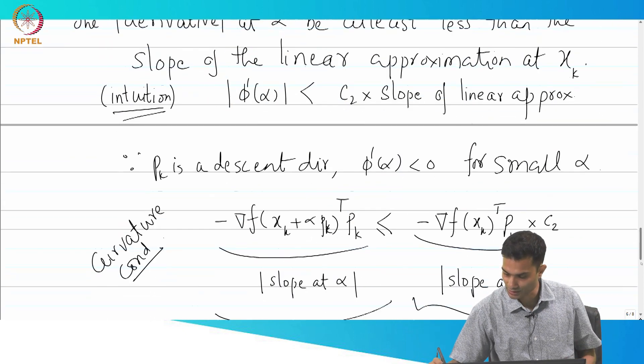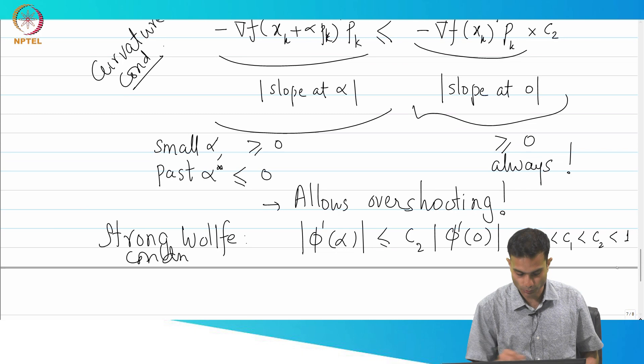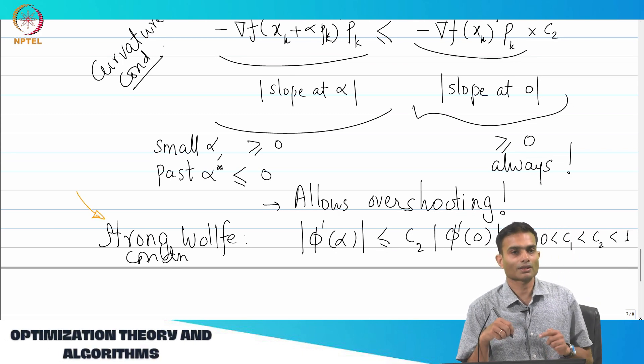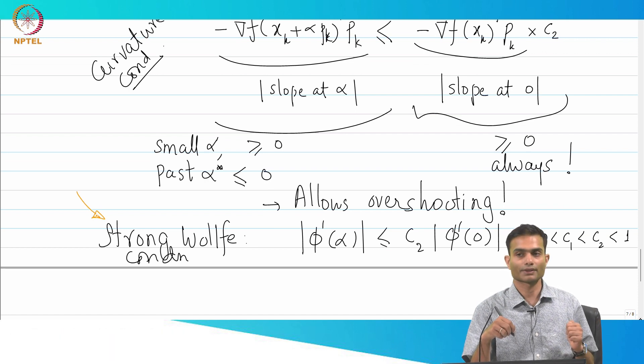I will suggest just working with the graph the way I have drawn it and drawing slopes this way and convincing yourselves that if I use the strong Wolf condition, what have I achieved? First thing is very small values of α are rejected. Second is I can choose a biggish step now and I prevent overshooting. This is put together, this is probably the most effective of conditions.